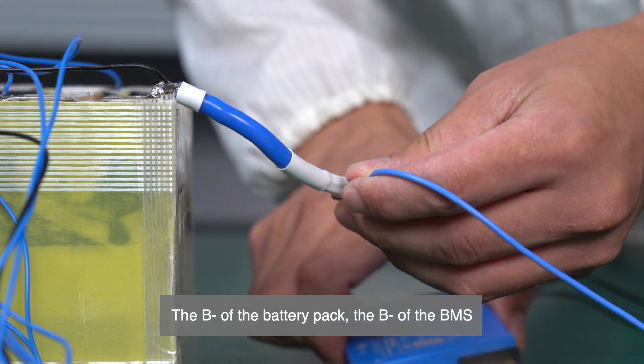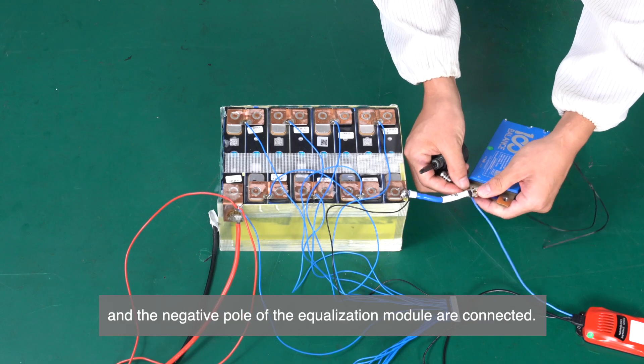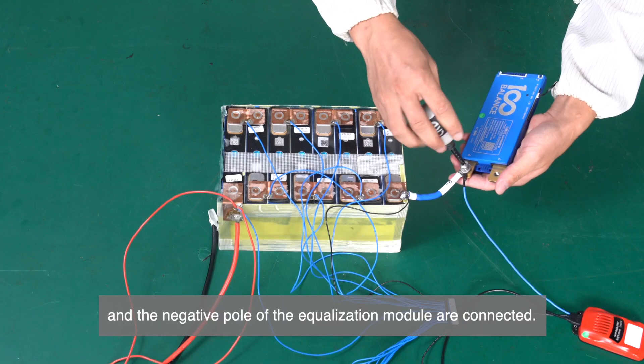The B- of the battery pack, the B- of the BMS, and the negative pole of the equalization module are connected.